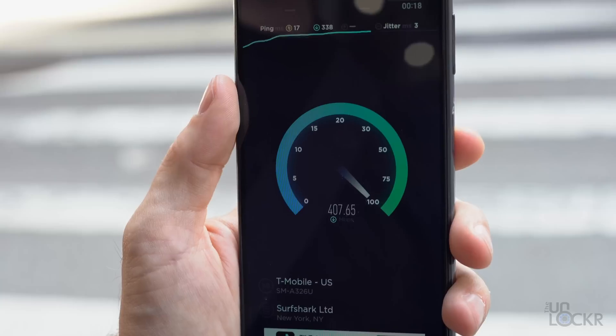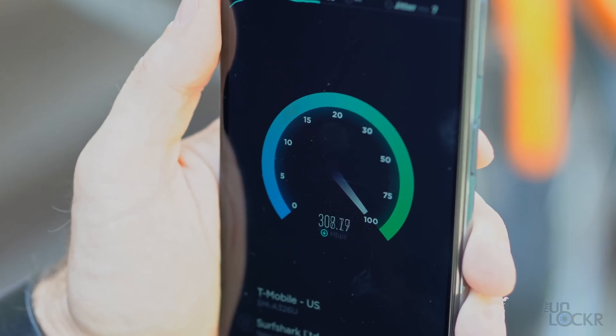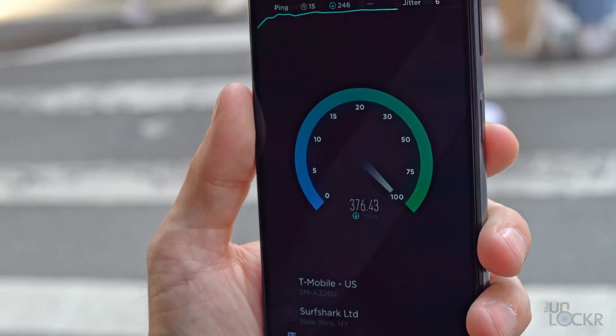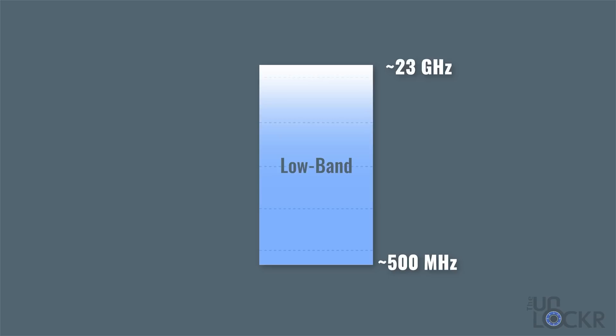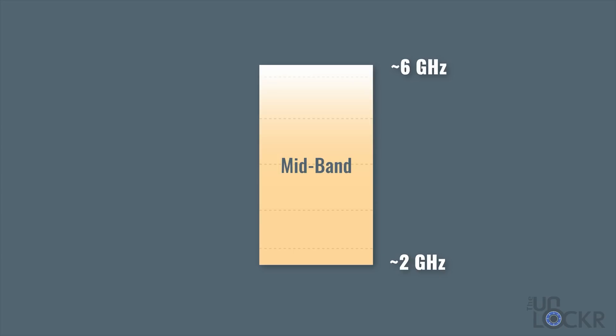So why the rush to get C-band out as fast as possible? As already mentioned, it sits in a sweet spot between millimeter wave and low band. Here in NYC, for example, I was able to hit 300 megabits per second constantly, even while wandering around. To be clear, C-band is not some crazy end-all be-all solution for 5G. All the carriers here in the US are going to deploy 5G on low band, mid-band including C-band, and millimeter wave.